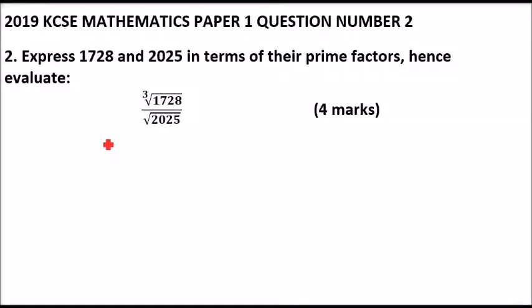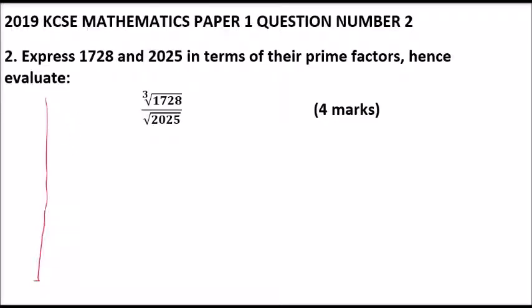Question number two: express 1728 and 2025 in terms of their prime factors, hence evaluate. We are asked to find the cube root of 1728 and the square root of 2025. So let's first write these in terms of their prime factors.